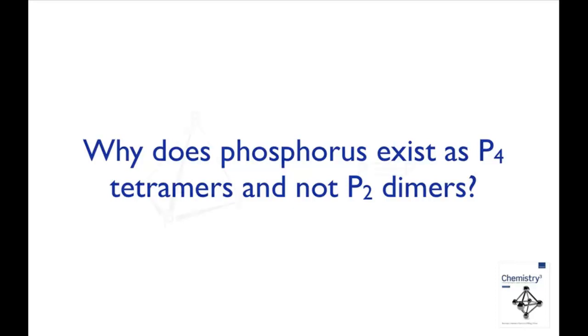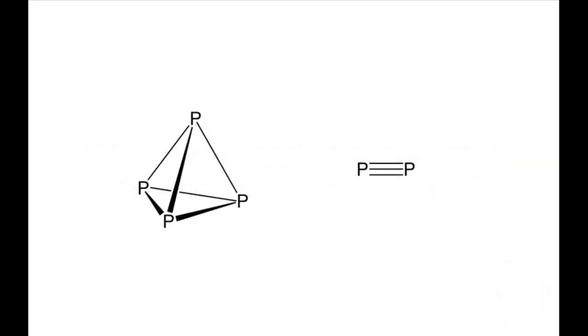The white phosphorus allotrope exists as P4 tetrahedral molecules, with each phosphorus atom forming three single bonds. This is different from the structure of nitrogen, which exists as triply bonded N2 molecules.